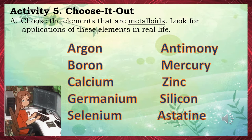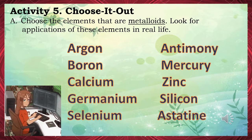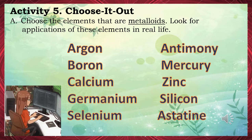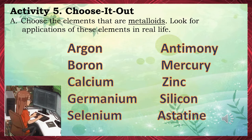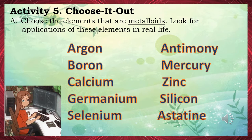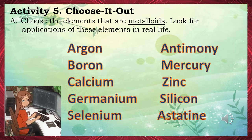Activity 5: Choose It Out. Choose the elements that are metalloids and look for their applications in real life. The answers are boron, germanium, antimony, silicon, and astatine.